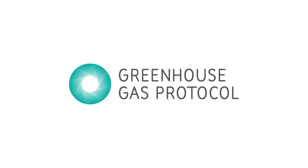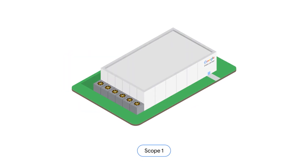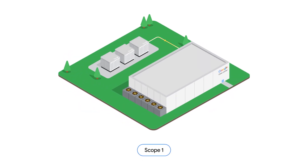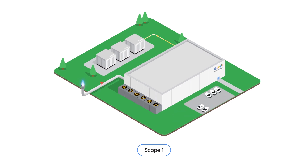We follow the Greenhouse Gas Protocol, the global standard for carbon accounting. The GHG Protocol categorizes emissions into three scopes. For Google, they are Scope 1: direct emissions from backup generators, natural gas heating, and fleet vehicles.